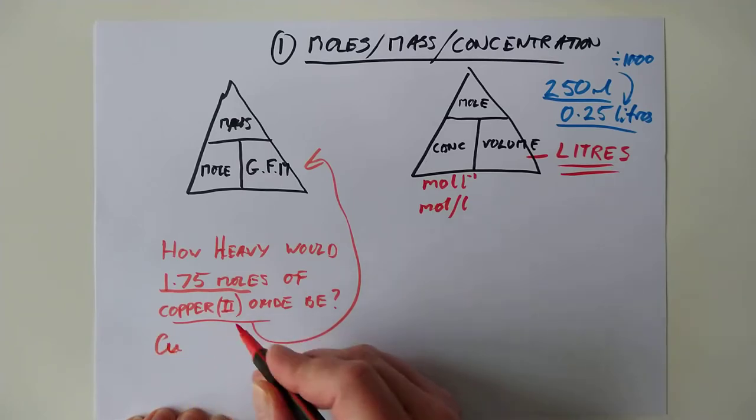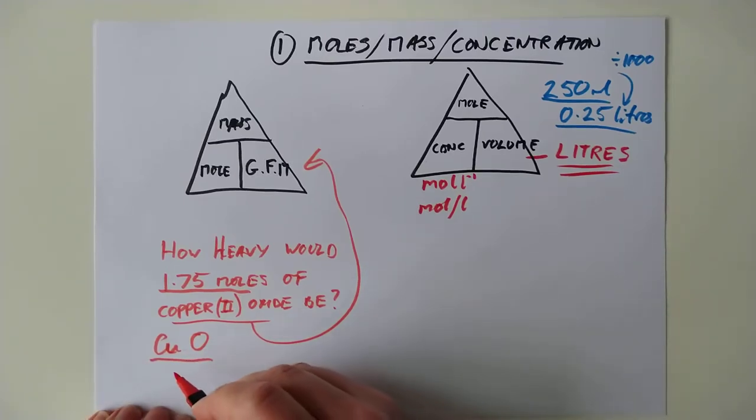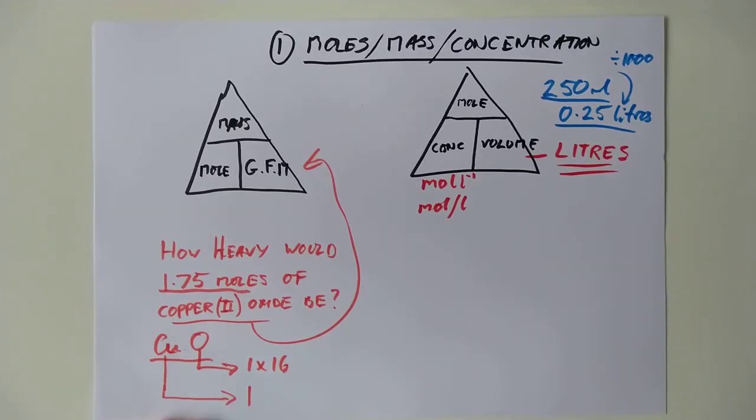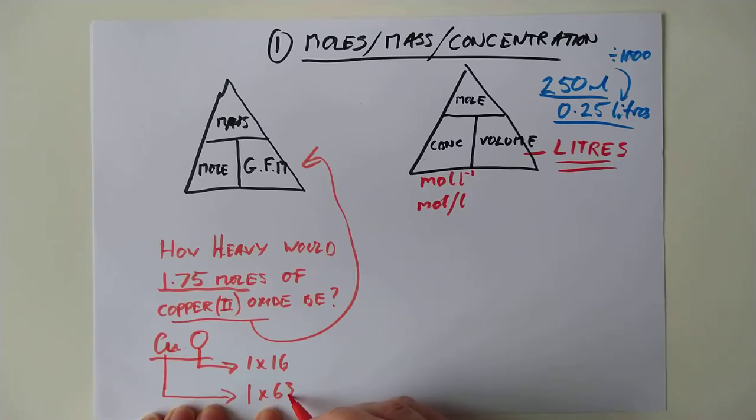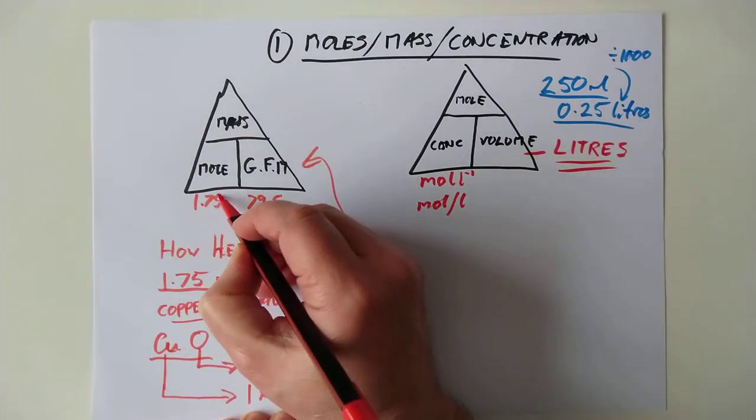The formula for copper oxide is copper, the valency is 2, oxygen valency 2, and the 2s cancel out, and you end up with CuO. So let's work out the GFM from there. We've got 1 oxygen, so that's 1 times 16. 1 copper is 63.5, that's on page 7 of your data book. 63.5 plus 16 takes us up to 79.5. That is the GFM, so 79.5. And we had 1.75 moles.